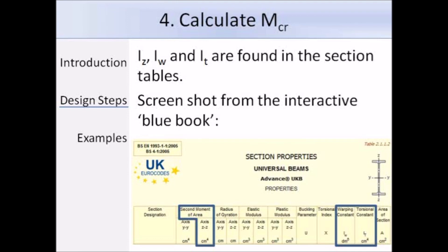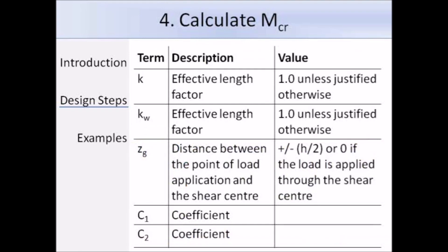The remaining terms in the expression for M_CR are K and K_W, which are effective length factors. We will assume that these values are equal to 1 unless justified otherwise. We then have Z_g, which is the distance between the point of load application and the shear centre — if the load is applied on top of the top flange, that distance is the depth of the beam divided by 2. The bottom two terms, C1 and C2, are coefficients, and I will show you later where to get the values for those.